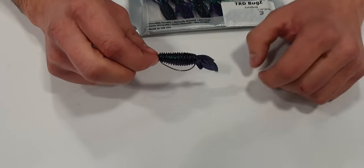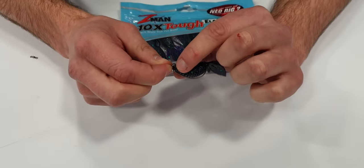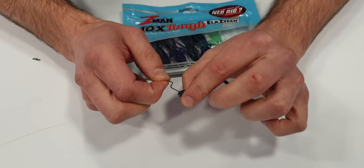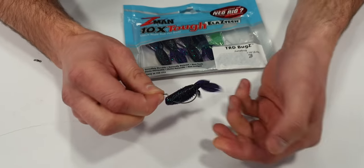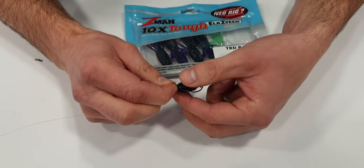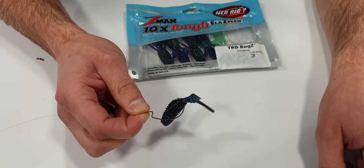The problem you can have is after a few fish, or after fishing with a lure for a while, the hole at the top here becomes enlarged and they can easily slide down the shank when you're casting and retrieving, or when you're getting takes from fish, and that ruins your presentation.